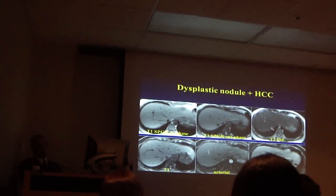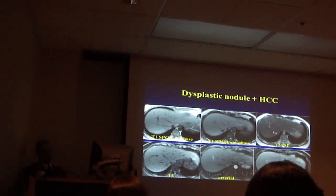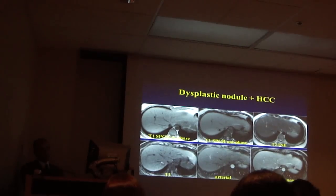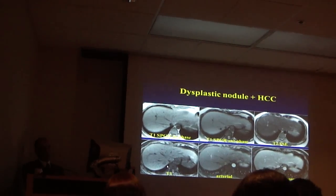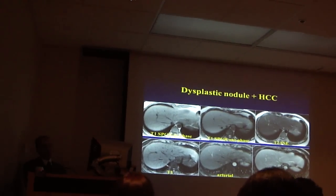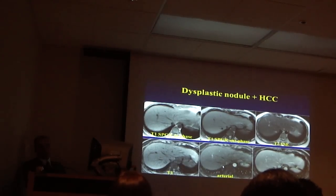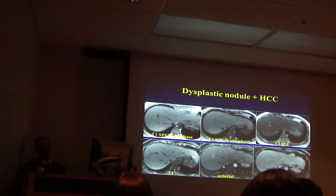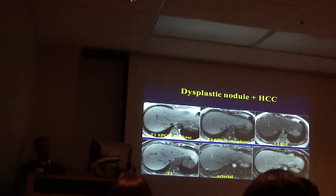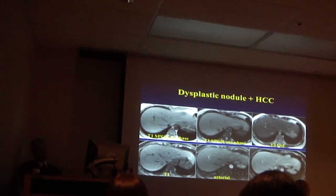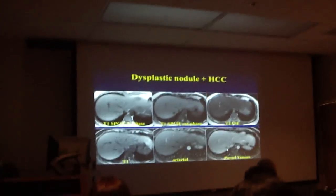On T2-weighted images you can again see the lesion. Look at the entire lesion — a part of it actually demonstrates enhancement on arterial phase. And the part that is demonstrating enhancement demonstrates washout.